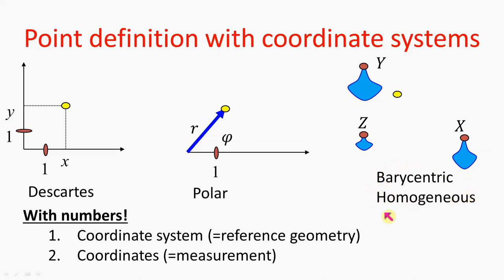The barycentric, also called homogeneous coordinate system, will be very useful to us, both in the definition of free-form curves and in dealing with geometries where there is no possibility to measure the distance between two points. Here the geometric reference system is a collection of three points. We put weight x in the first reference point, weight y in the second reference point, and weight z in the third reference point. This establishes a mechanical system, and we consider the point where the center of mass is located. So with three numbers x, y, and z, we can identify a point with this center of mass analogy.